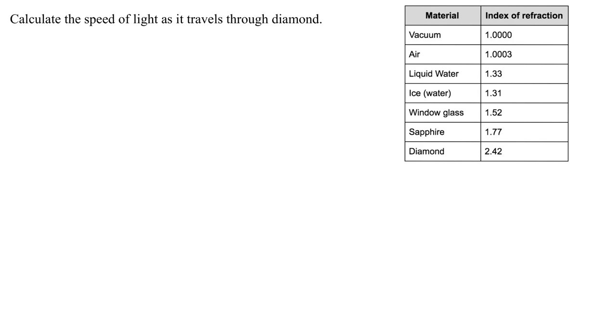Here's another problem. Calculate the speed of light as it travels through diamond. Notice that this problem doesn't give us any data at all. Most likely, you'll have a table of common indices of refraction, and that's where you're going to find the index of refraction for diamond.